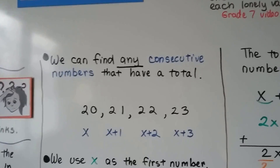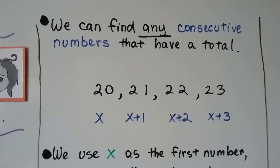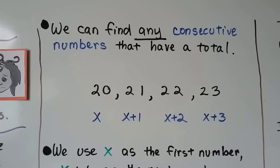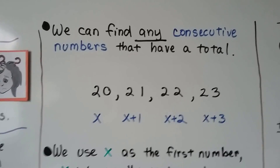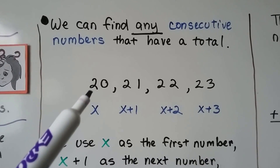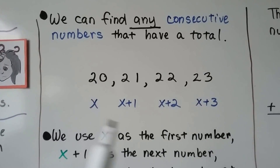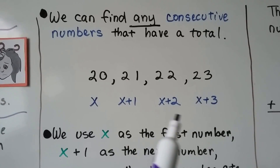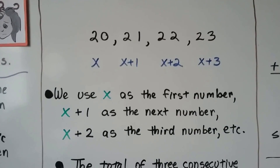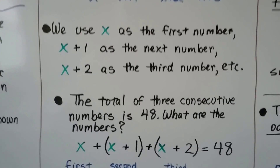We can find any consecutive numbers that have a total. Here we have 4 numbers that are consecutive — they go in order: 20, 21, 22, 23. We represent 20 as x. 21 is 1 more than 20, so we call it x plus 1. 22 is 2 more than 20, so we call it x plus 2. 23 is 3 more than 20, so we call it x plus 3. We use x as the first number, x plus 1 as the next, x plus 2 as the third, and so on.